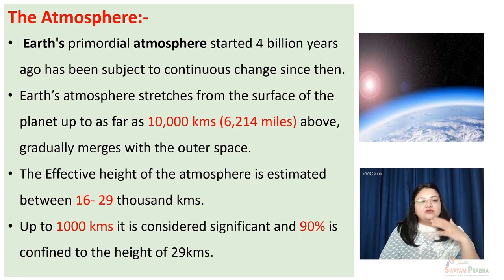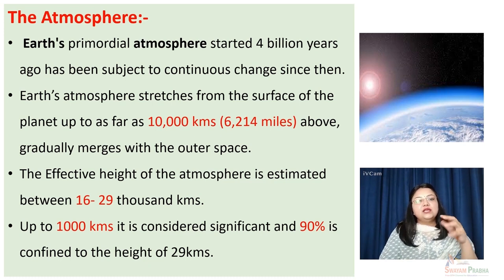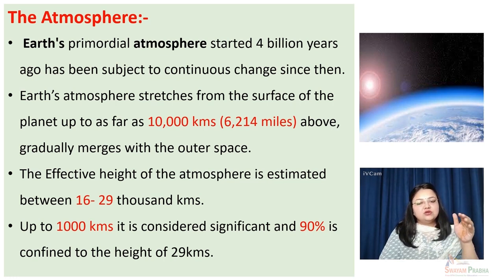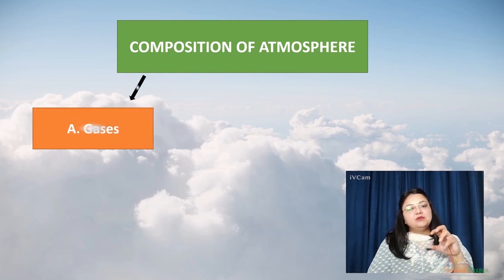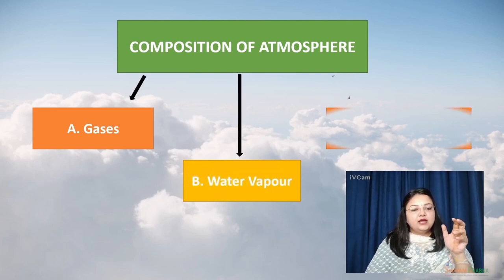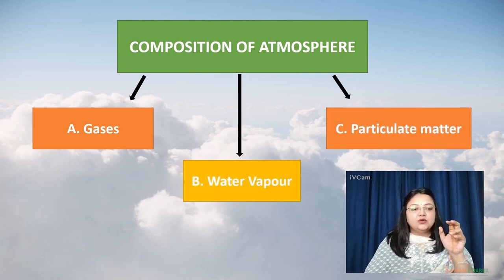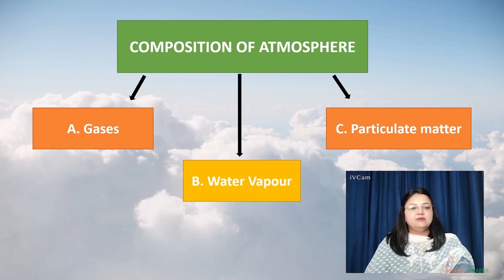So while we have a major stretch of atmosphere up to 10,000 kilometers, what is most relevant to all life processes and weather patterns on the surface of earth extends only to about 1,000 kilometers, and 90% of it is confined to the height of just 29 kilometers. Looking at the present composition of the earth's atmosphere, it can be mainly divided into three components: gases, water vapor, and particulate matter.